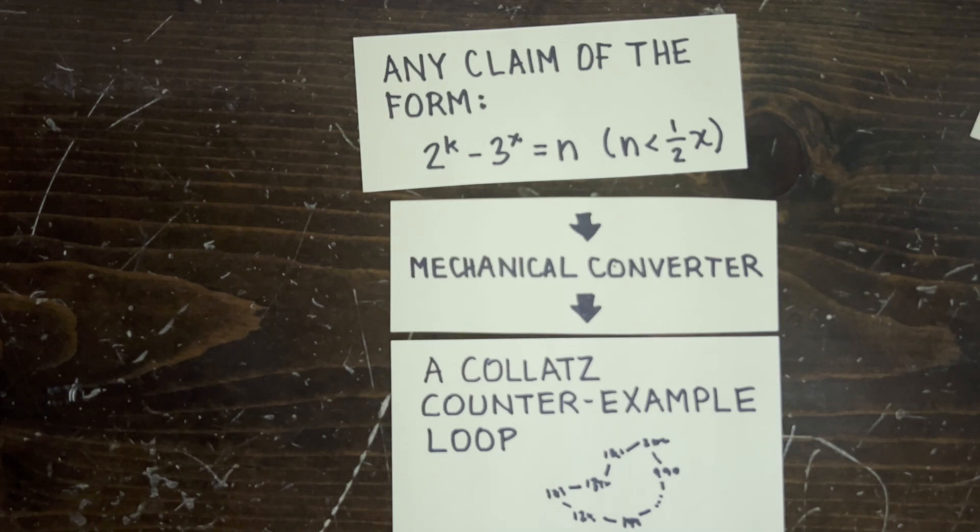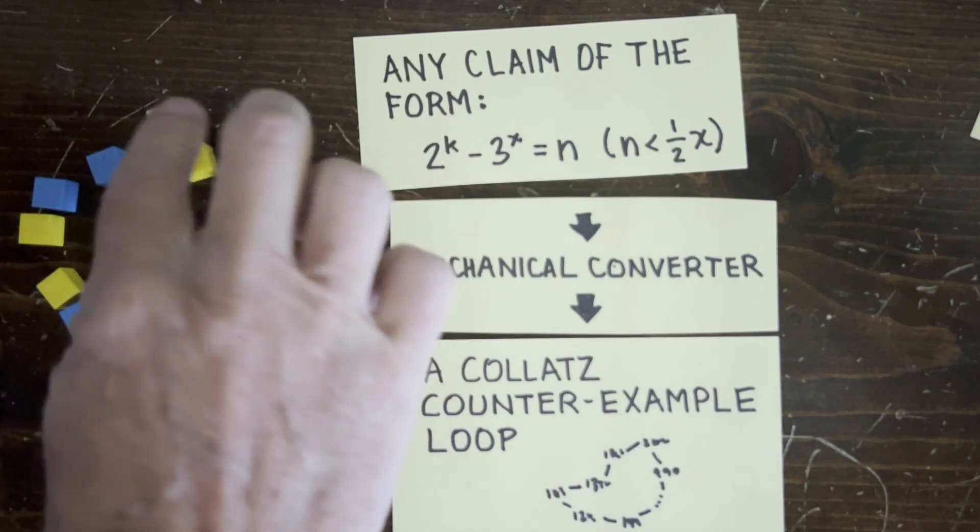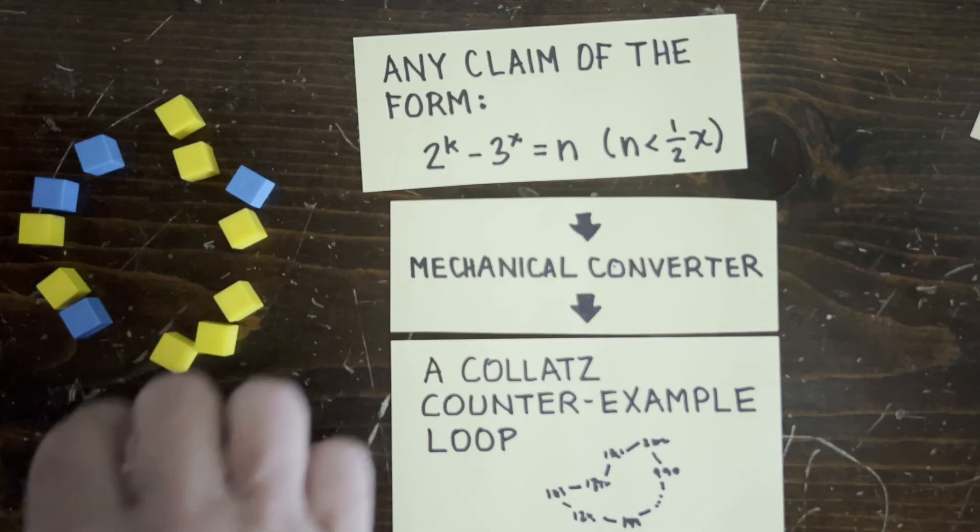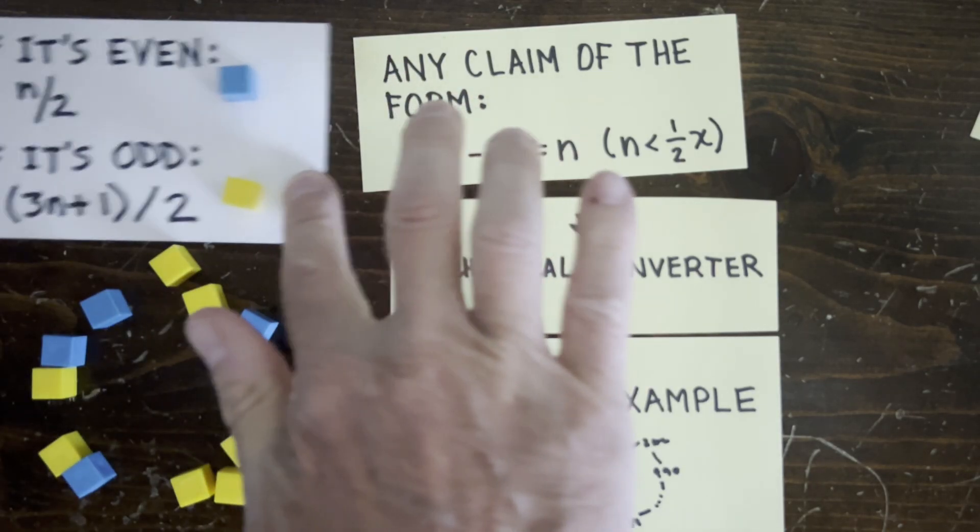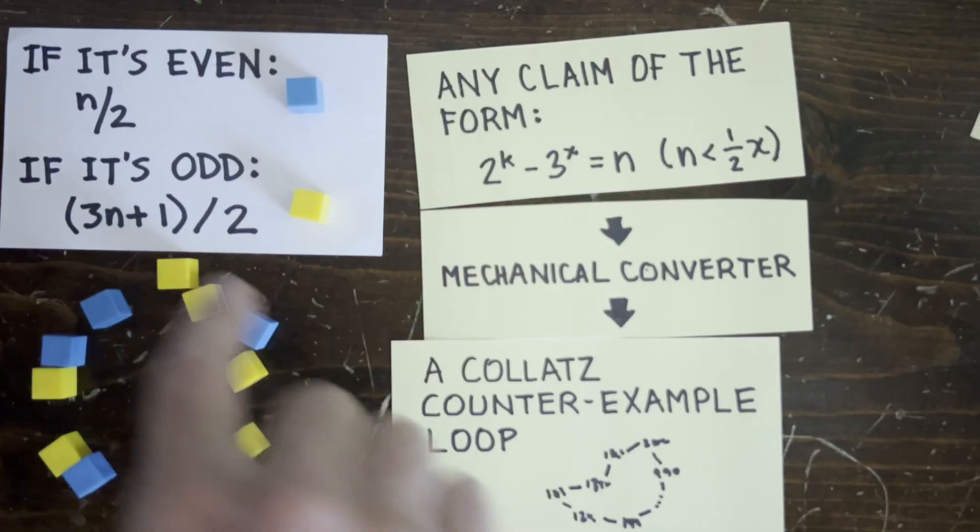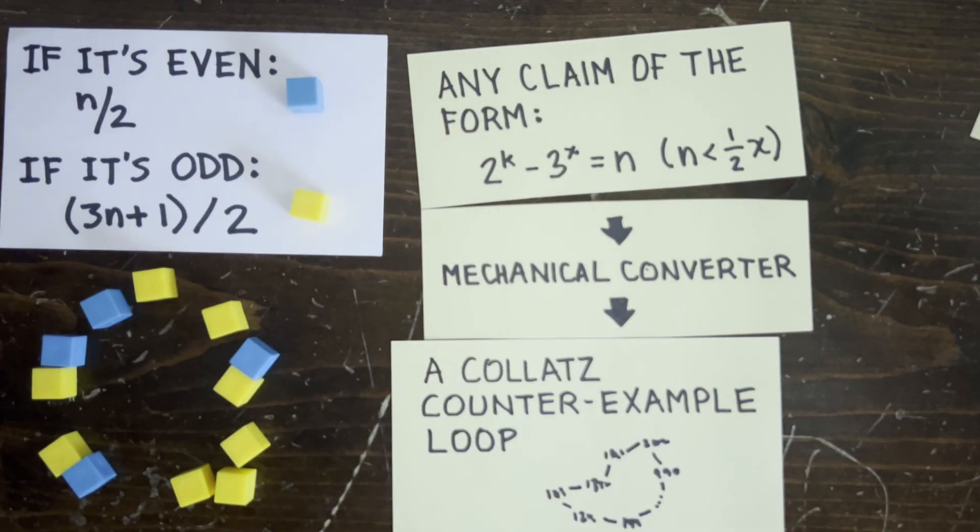We take the claim and first create a loop shape that looks like this. Up, down, up, down, up, down, so on, and then up, up, up, up. The loop has length k with x up moves. Up means do 3n plus 1 over 2, and down means n over 2, just follow the Collatz rule.